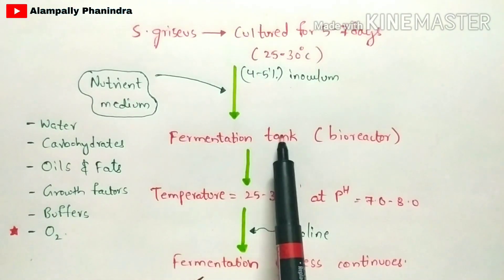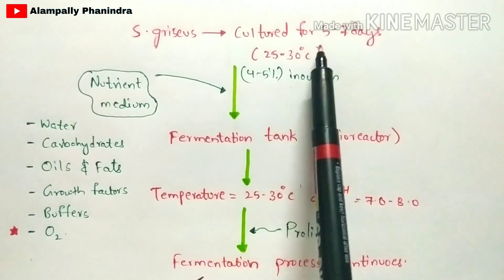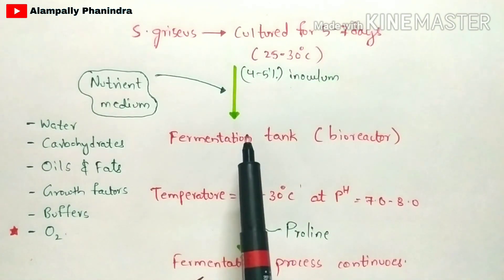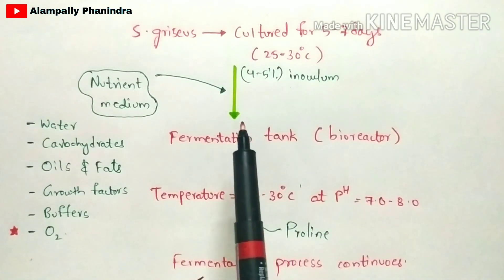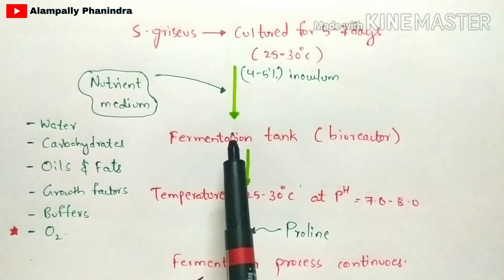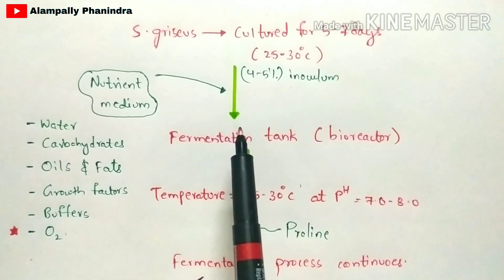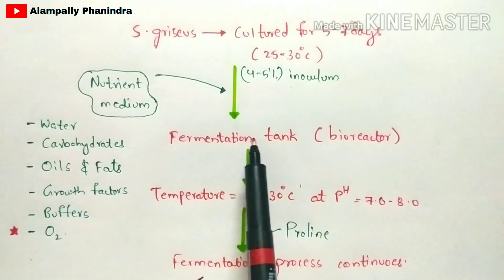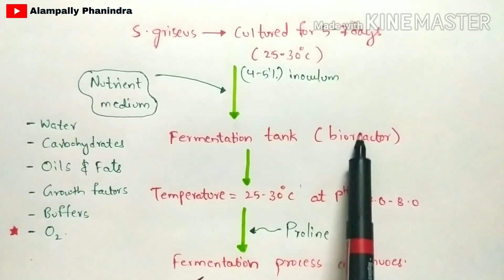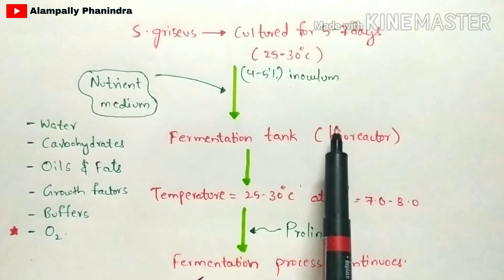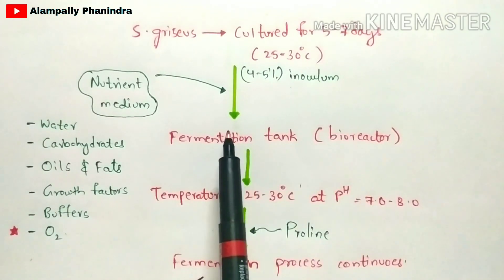After completion of 5 to 7 days, you are going to take a fermentation tank and clean it with water to avoid contamination of the bacteria. The fermentation tank is also called a bioreactor or bioreactor tank.